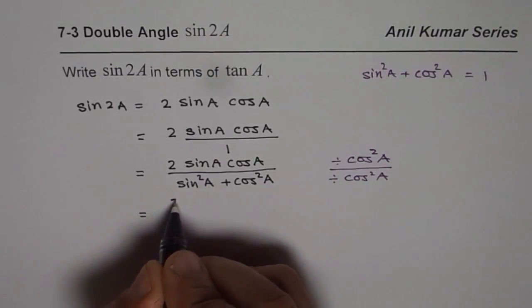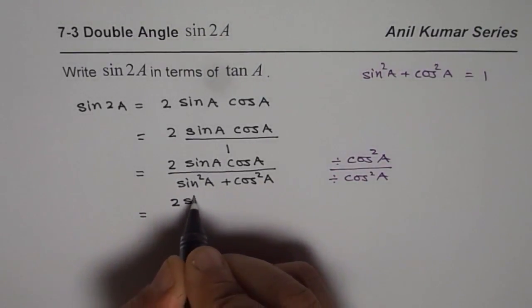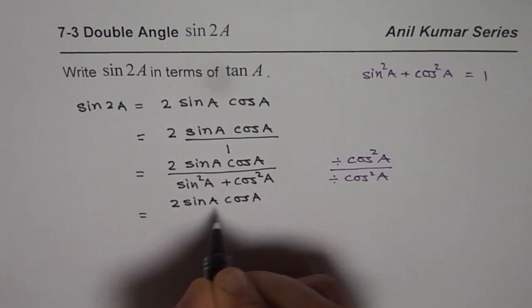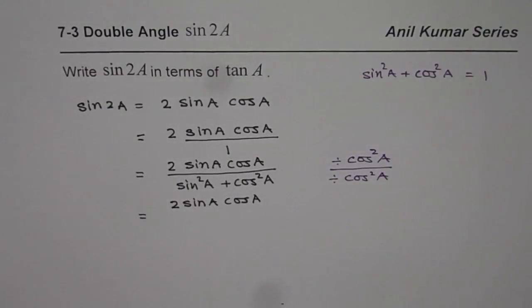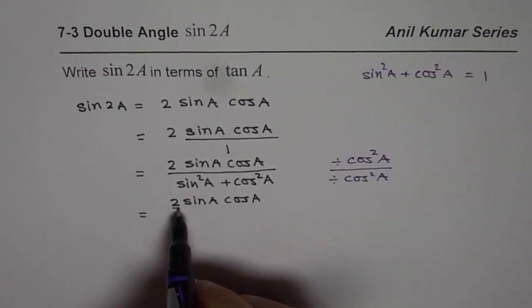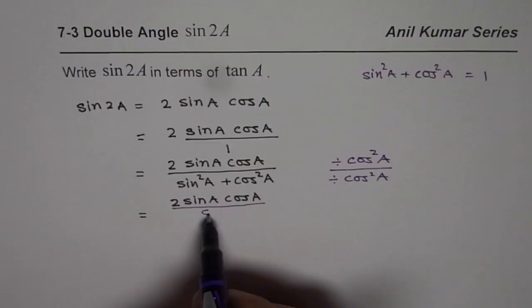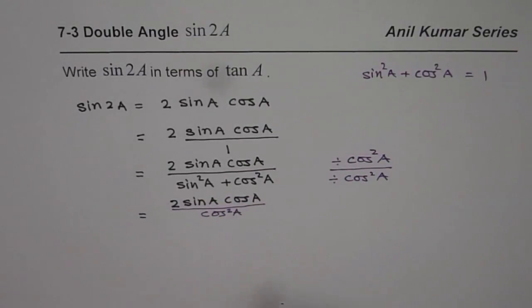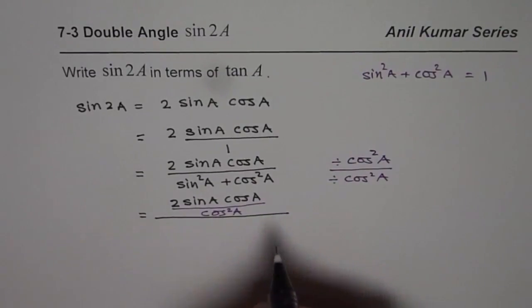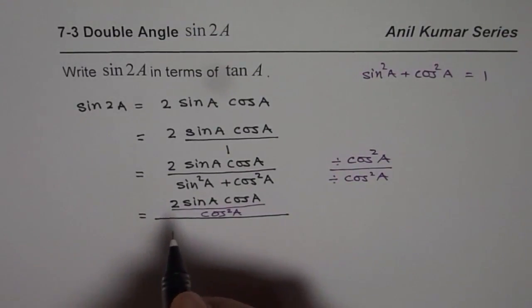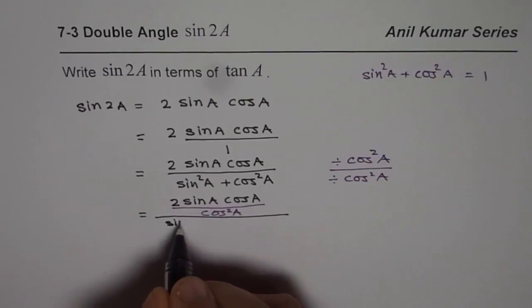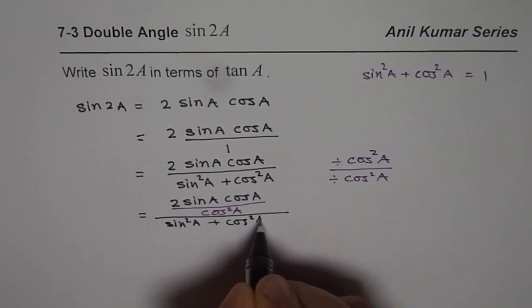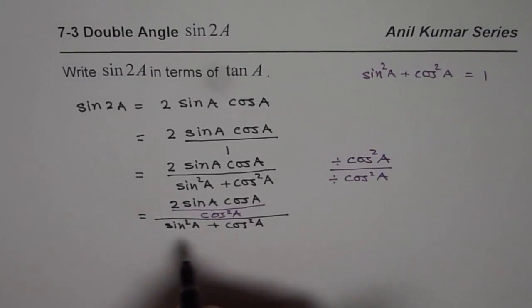Let me write it first and then I will show you. We have 2 sine A cos A and we are dividing it by cos square A. Let me use a different ink. And we divide it by cos square A. You need to understand the strategies of how to, this will also help you to solve some trigonometric identities. So, sin square A plus cos square A and we divide all of them by cos square A.